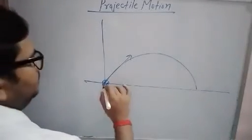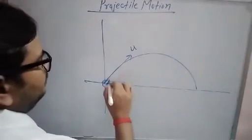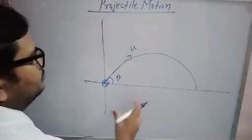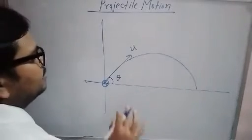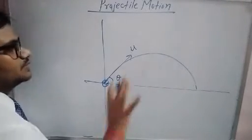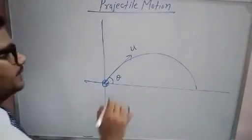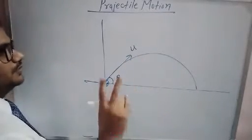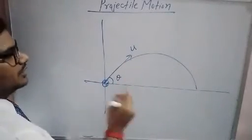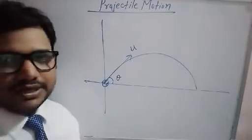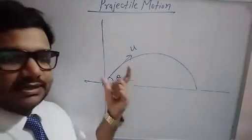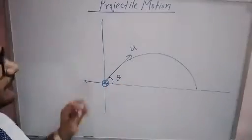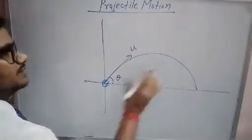Suppose you throw a ball with some initial speed u making an angle theta with the horizontal. Then you have to find its speed at any time t or its displacement at any time t. You have to solve it in two different parts: first, motion along the x-axis, and second, motion along the y-axis. If you split this two-dimensional motion into two parts, it will be easy for you to analyze the problem.